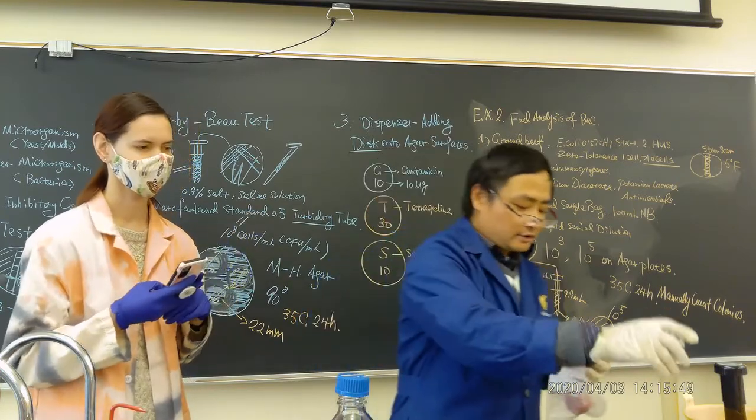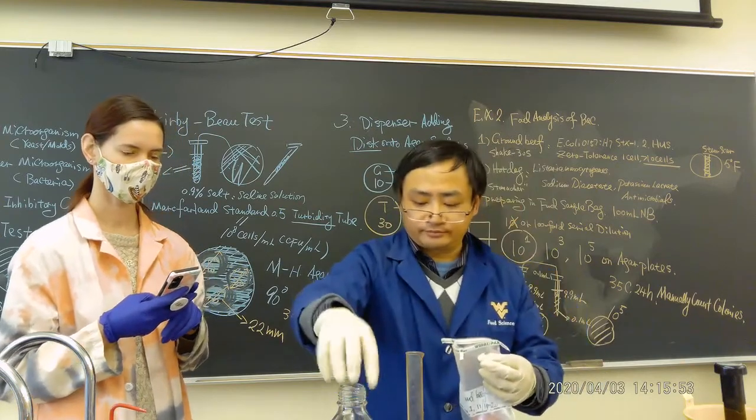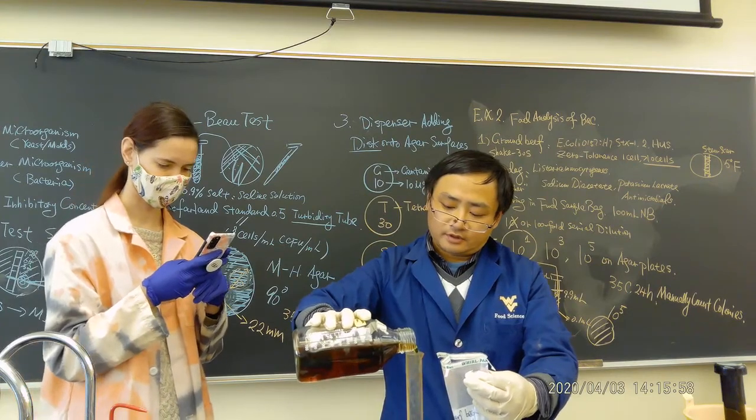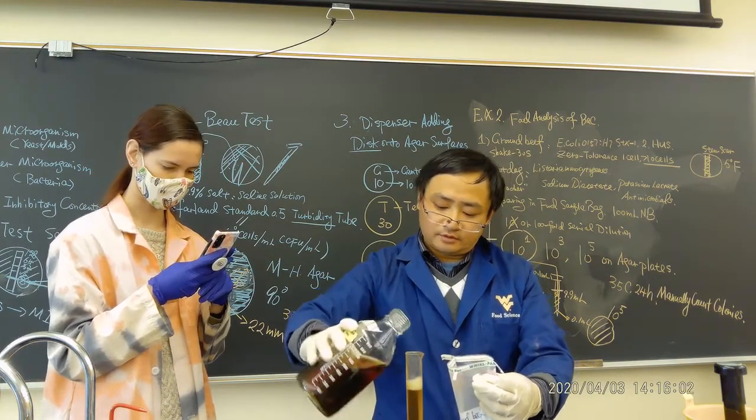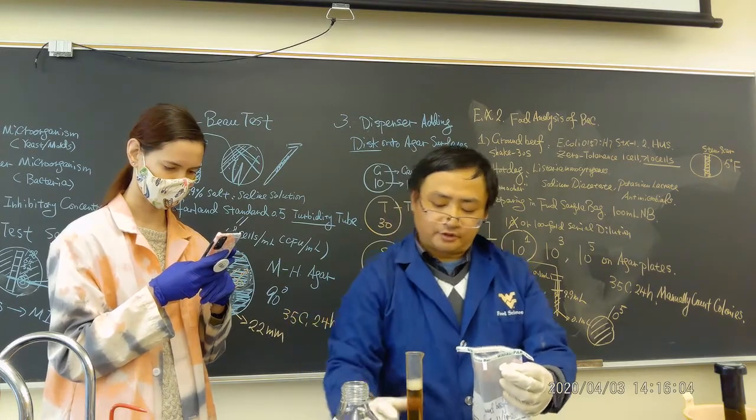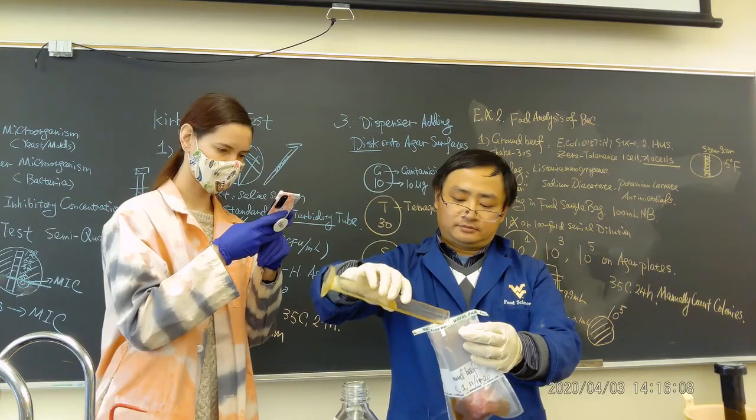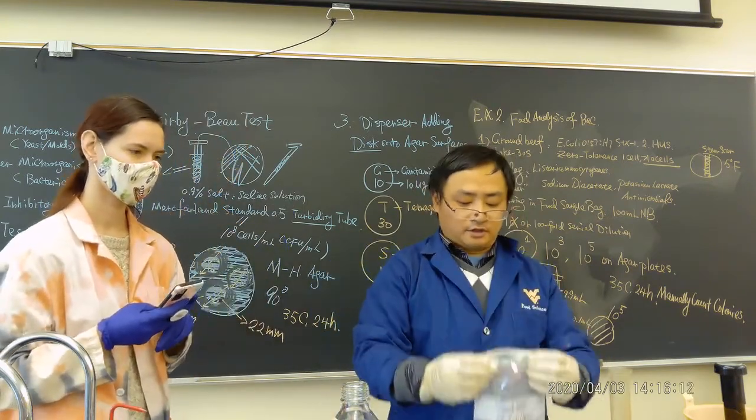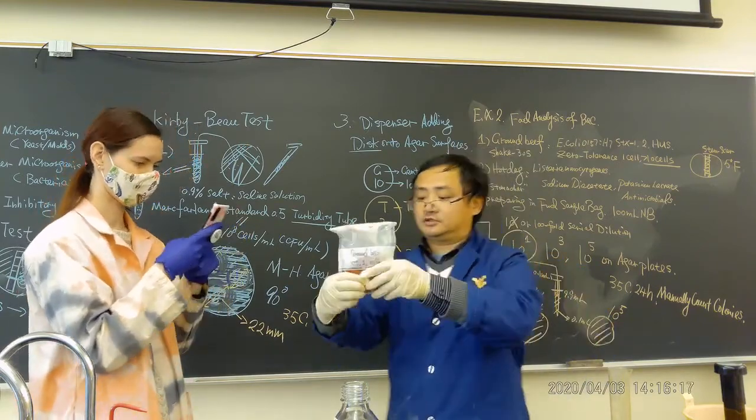Now, the same thing. We get add 100 grams, 100 ml of the neutral broth. So, we add it there. Now, what's the next step? You close it. You use your hands to mix it.